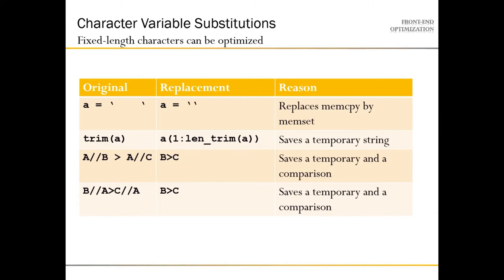Another point where we'd have fairly poor efficiency otherwise is TRIM, which is used a lot. The way we implement characters involves many temporary variables, but a substring from one to LEN_TRIM works the same, so we replace that.